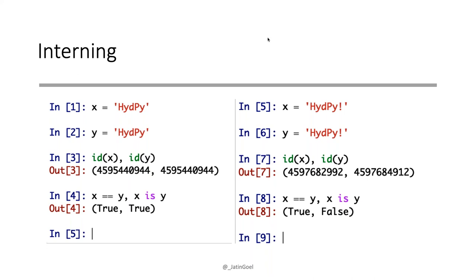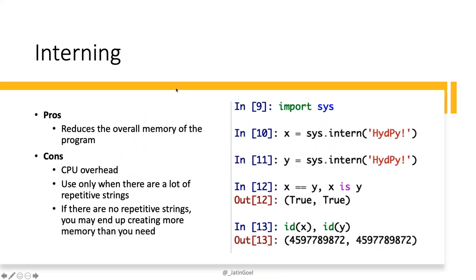On the left side of the demo, we have a simple string 'height by' assigned to both x and y — id() returns the same address, and both equality and identity checks match. But on the right side, the same string has different ids and 'x is y' fails. The reason is encoding — when a string is created at runtime with certain characters like exclamation marks, Python cannot determine at runtime whether it should be interned.